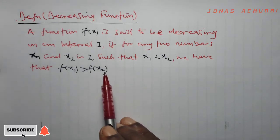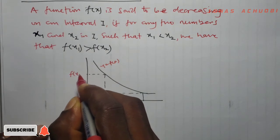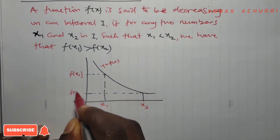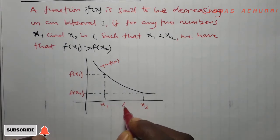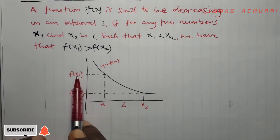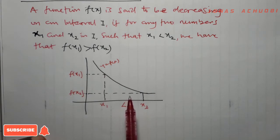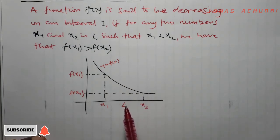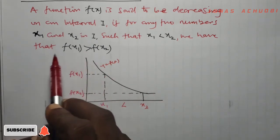Let's visualize this function graphically. We have two points: the first point is x1 with functional value f of x1, and the second point is x2 with functional value f of x2. From this setup, x1 is clearly less than x2, and the functional value of x1, f of x1, is greater than f of x2. So this setup defines what we call a decreasing function — the function y equal to f of x with this curve is a decreasing function. We observe that the graph of a decreasing function falls from left to right.